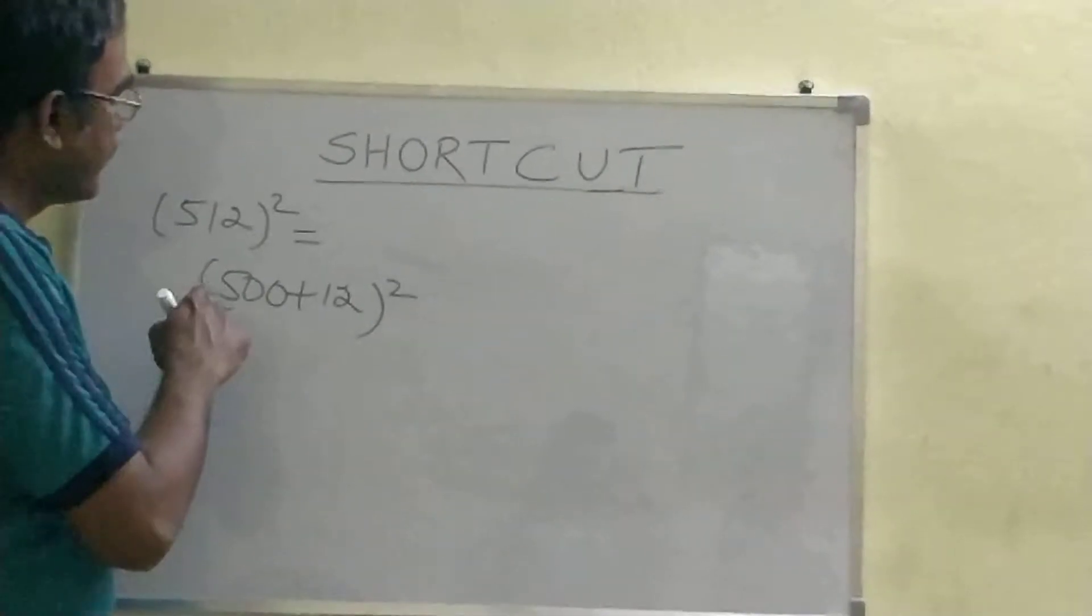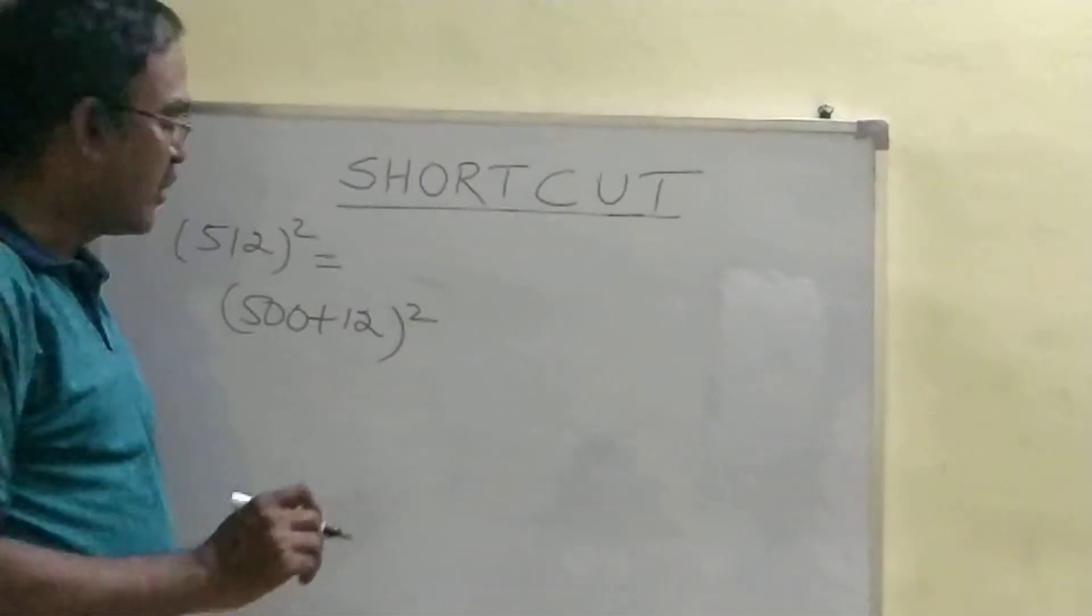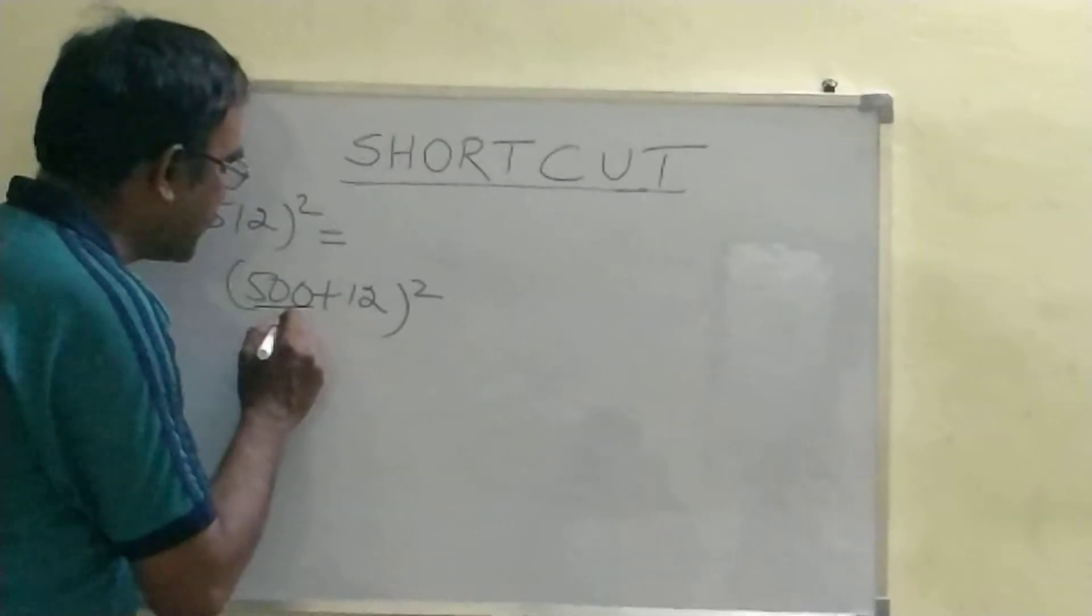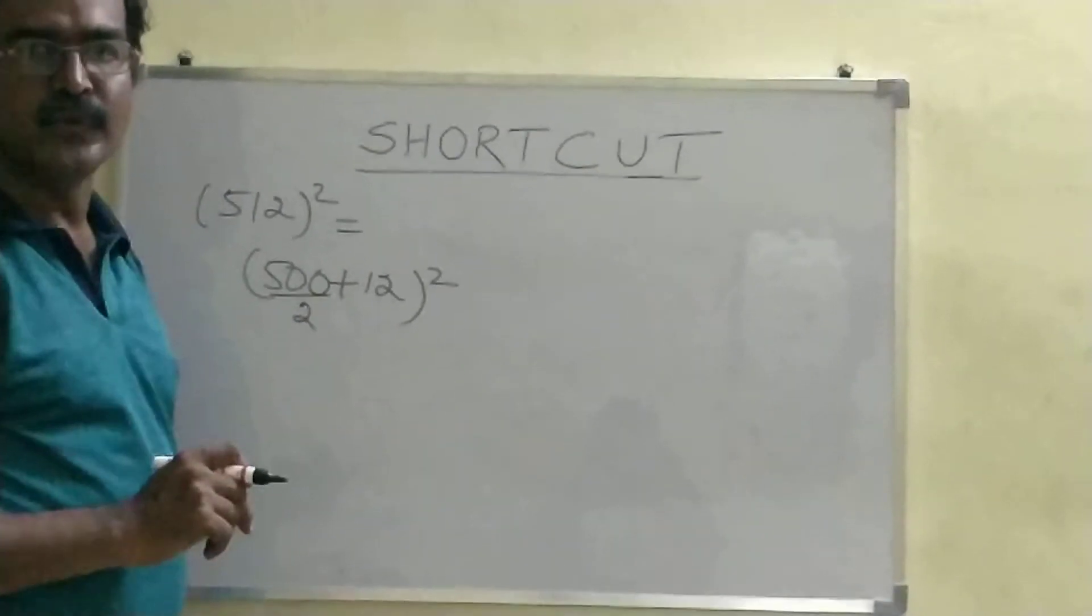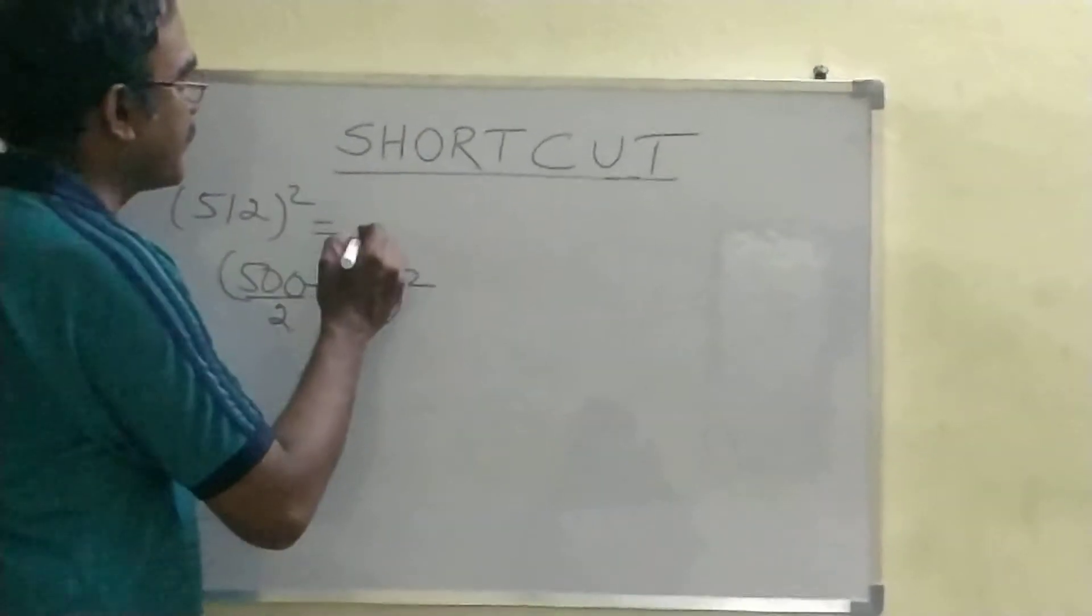512 whole square. How to do this? 500 plus 12 whole square. Shall I divide this number by 2? Once I divide this number by 2, 500 by 2 is 250. What is 250 plus 12? 262.